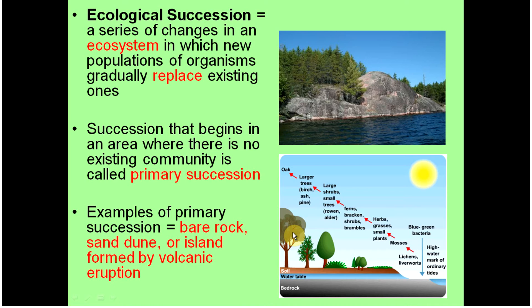We define ecological succession as changes within an ecosystem, where we start out with a population of organisms that gets replaced by other more successful organisms, and we continue to replace organisms over and over again until we get to what's called a climax community, which we'll talk about in a second.